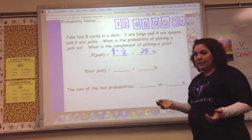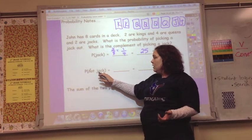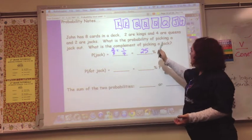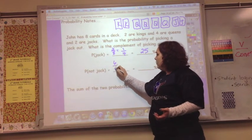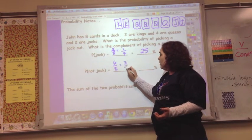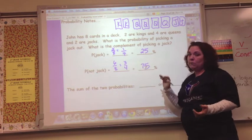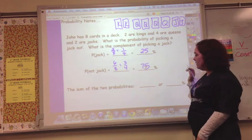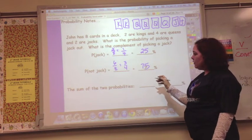And then the complement to that is how many are not jacks. So not jacks is 1, 2, 3, 4, 5, 6. 6 out of 8, which simplifies to 3 fourths, and that's 75%. 3 fourths, 3 quarters of a dollar, 75 cents, 75%. So what's the sum of the two probabilities?